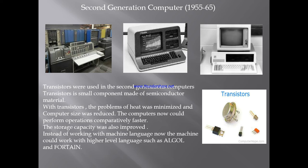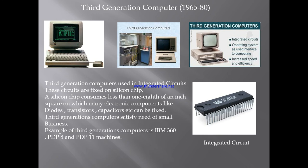Instead of working with machine language, the machine could now work with higher-level languages such as ALGOL and FORTRAN. Second generation computers — also called transistor computers — used discrete transistors instead of vacuum tubes. In 1950–1960, circuit boards were filled with individual transistors and magnetic core memory, making sizes much smaller.